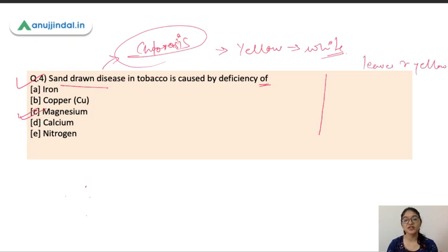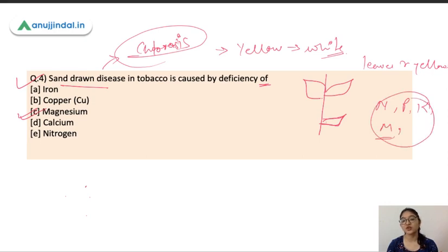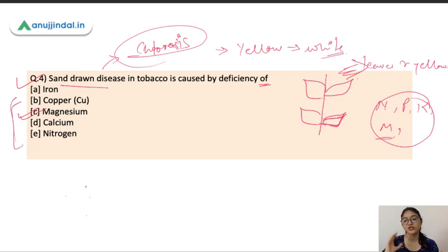An important point is to observe which leaves show deficiency symptoms. For mobile nutrients — nitrogen, phosphorus, potassium, and magnesium — deficiency symptoms appear in the lower leaves first. For immobile nutrients — calcium, iron, copper — deficiency symptoms appear in the upper leaves. This is a very important topic covering which nutrient deficiency causes which symptoms and diseases in different crops.